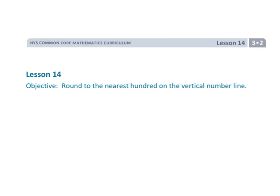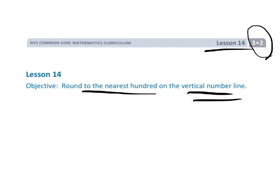All right, this is Grade 3, Module 2, Lesson 14. We're going to continue using a vertical number line, only now we're going to be rounding to the nearest hundred.